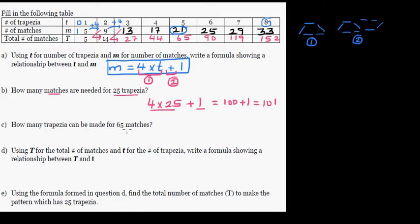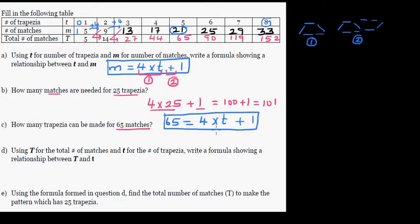Now the opposite question: how many trapezoids can be made with sixty-five matchsticks? We need to work backwards from sixty-five equals four times something plus one. To work backwards, you do the opposite operation in the opposite order. The last operation was adding one, so first we undo that by subtracting one.